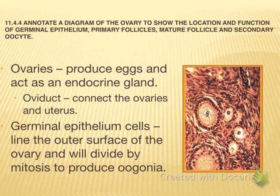Ovaries are about three centimeters long and about one and a half centimeters thick. They produce eggs, act as an endocrine gland secreting estrogen and progesterone, and the oviducts or fallopian tubes connect the ovary to the uterus. Germinal epithelial cells line the outer surface of the ovary and divide by mitosis to produce oogonia — cells that could become eggs.